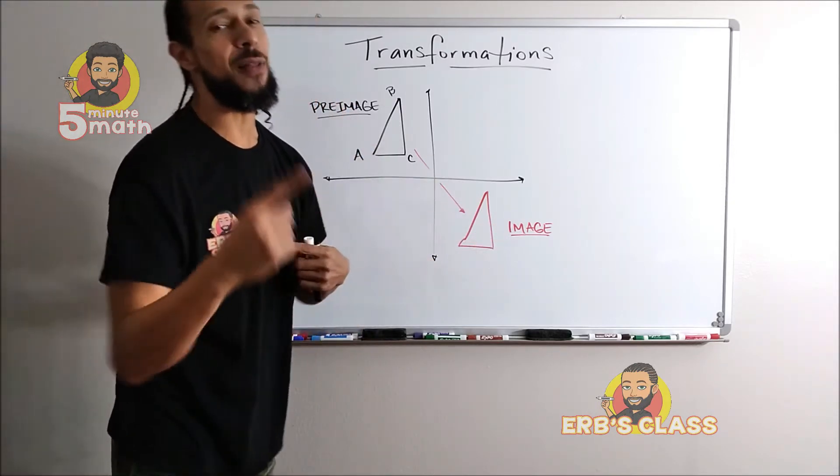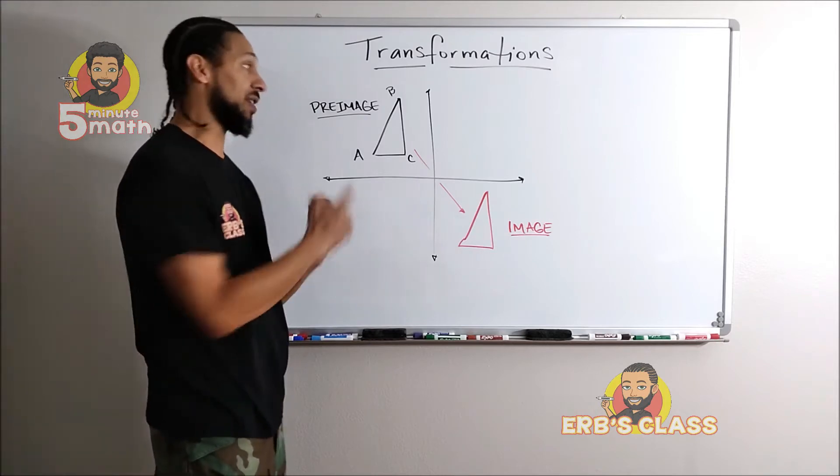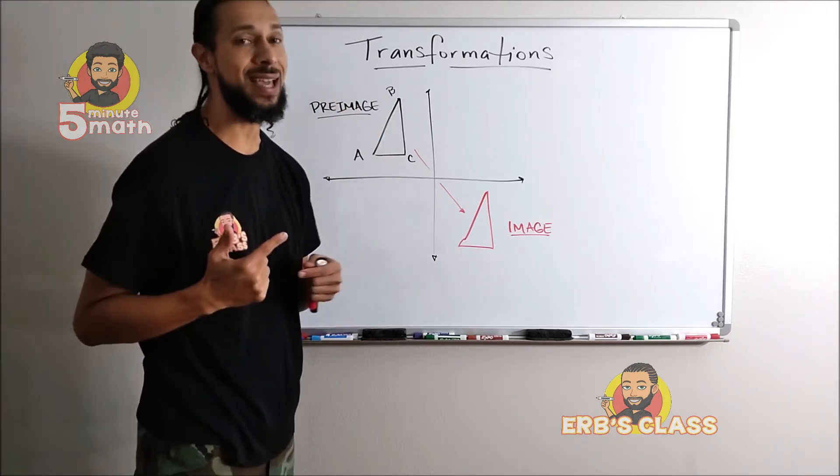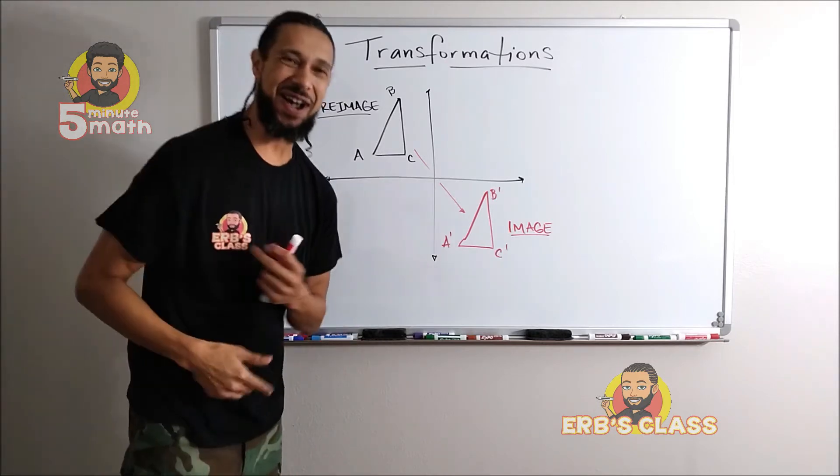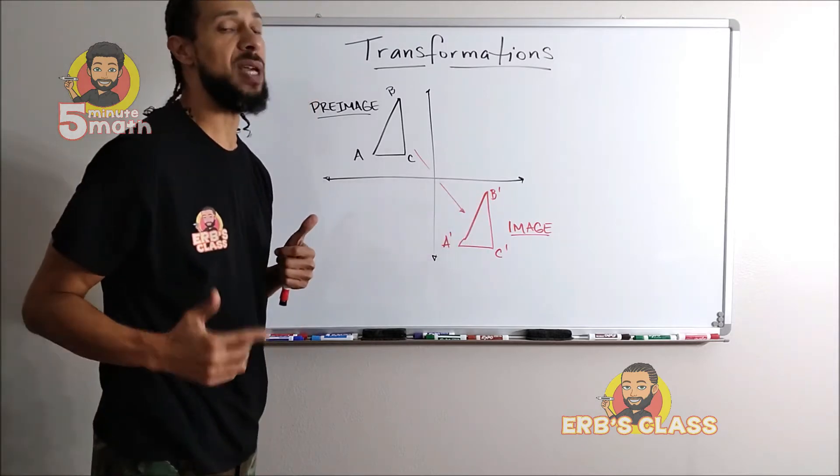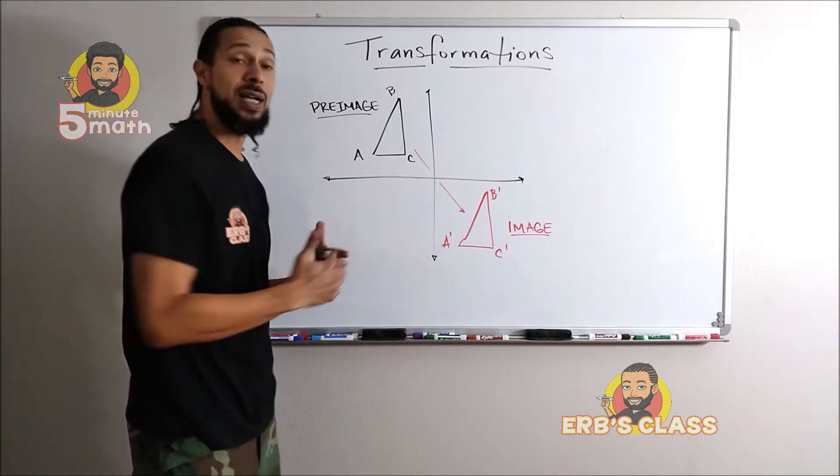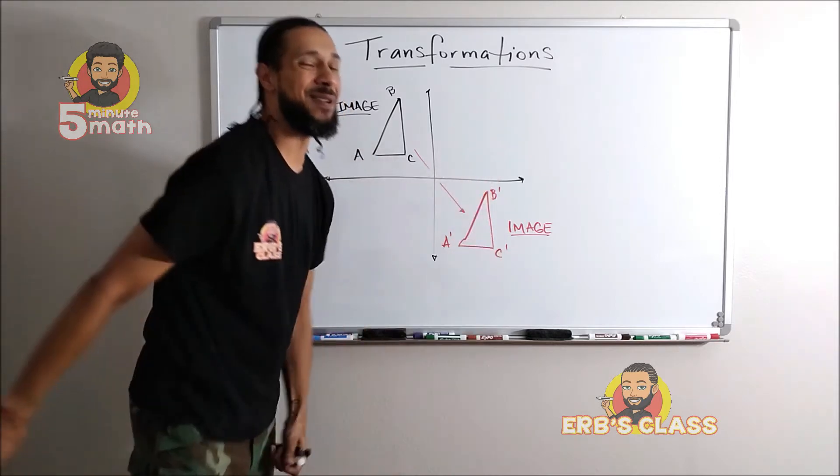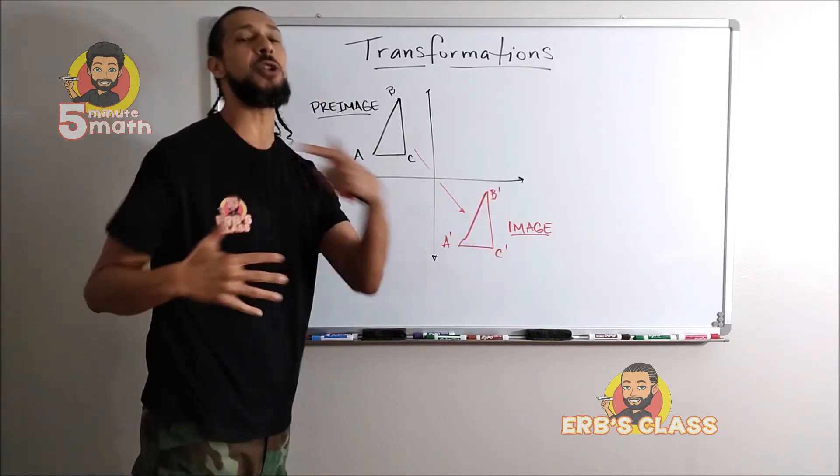After it's changed, it's called the image. Before: pre-image. After: image. Now the points' names also change. This was triangle ABC based on those points A, B, and C. After the change, they're called A', B', C'. That little apostrophe beside those letters means prime. It means it was changed. So this is now A prime, B prime, and C prime.